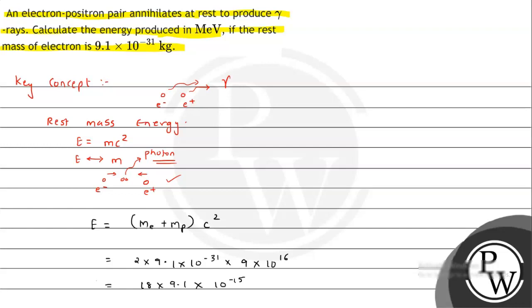So this is the value of E we are getting. And now we will solve this. Therefore E will be equal to 163.8 times 10 to the minus 15 joules. This is the value we are getting in joules, but we need mega electron volts. We know that 1 electron volt corresponds to 1.6 times 10 to the minus 19 joules.